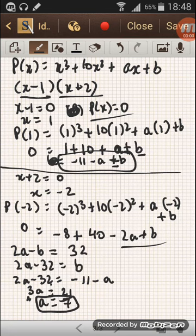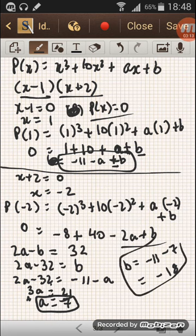We can find b's value. We'll calculate it as minus 11 minus a, which is minus 7, and this gives minus 18. So we have found the value of a and b. Thank you for watching this video.